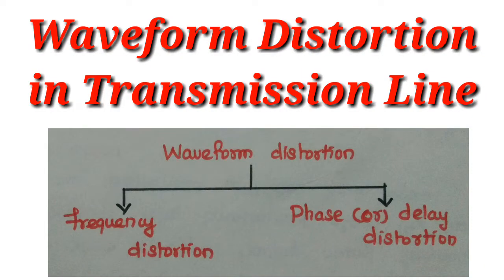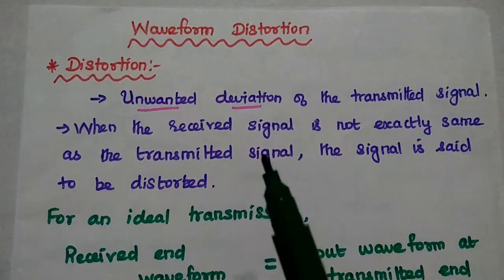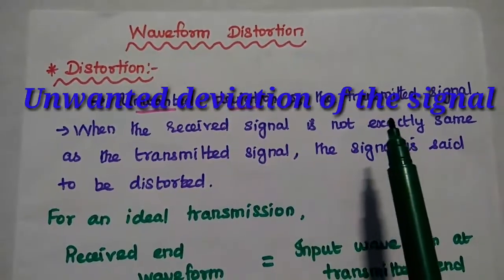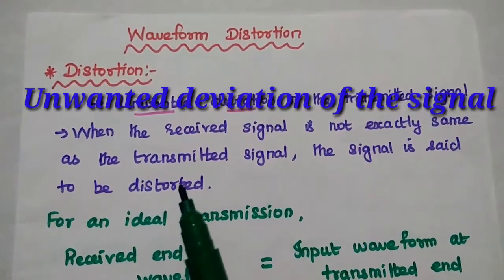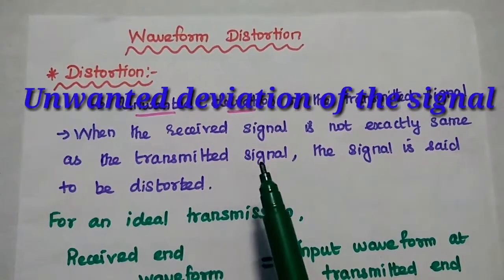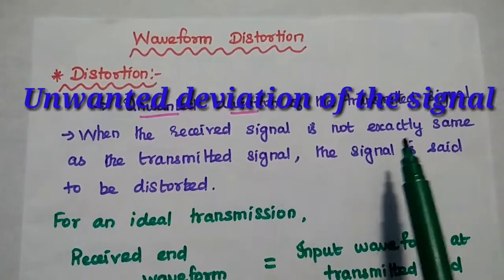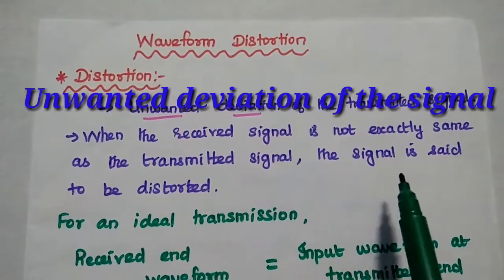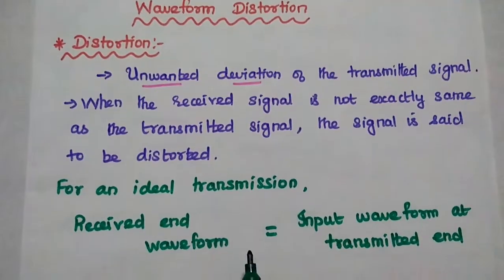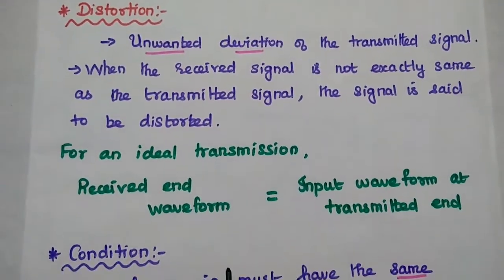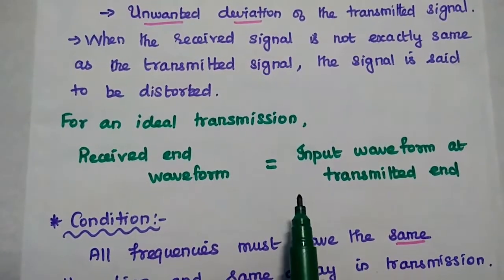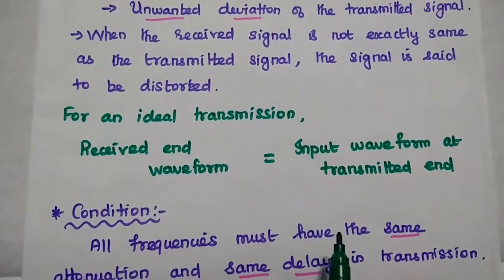We are going to discuss waveform distortion in transmission lines in detail. Any unwanted deviation of the signal is known as distortion. In a transmission line, when the received signal is not exactly the same as the transmitted signal, then the signal is said to be distorted. For an ideal transmission, the received end waveform should always be equal to the input waveform at the transmitting end.